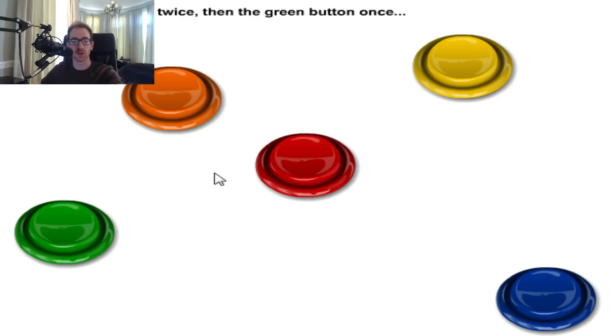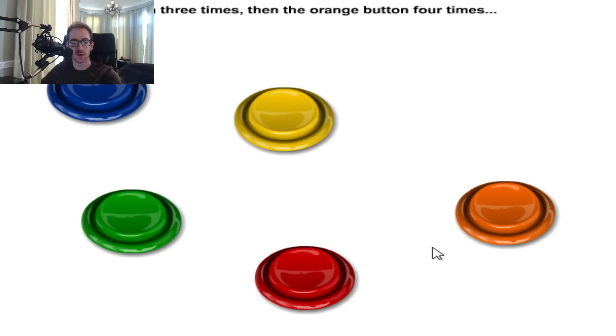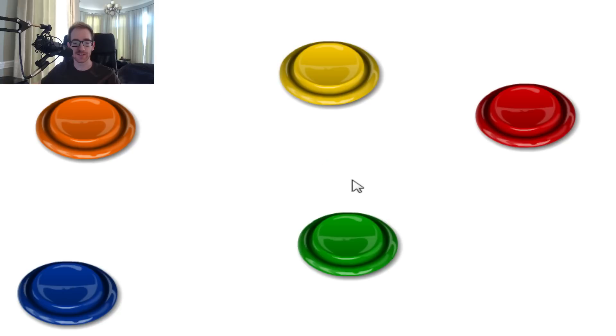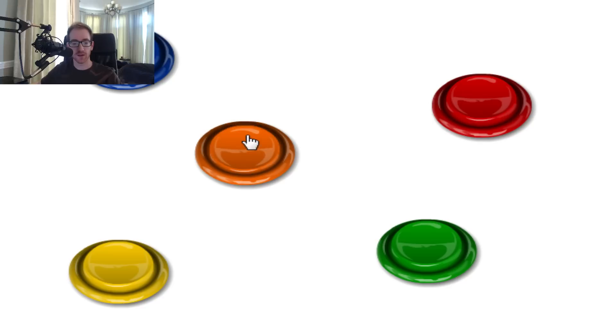Press the red button twice, then the green button once. One, two. Press the blue button three times, then the orange button four times. One, two, three. Orange four times, three, four. Holy shit, I passed the first level. I can now consider myself as a borderline idiot. Sweet. This is pretty easy so far.